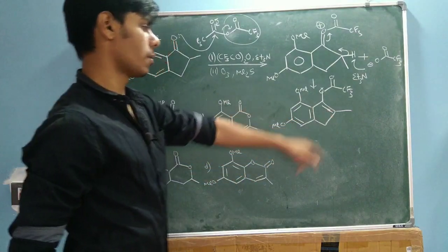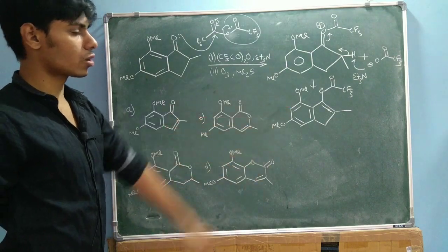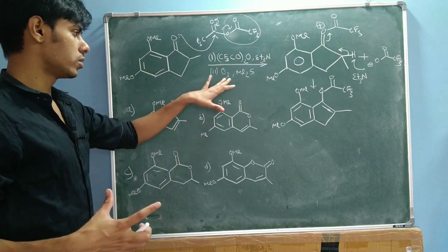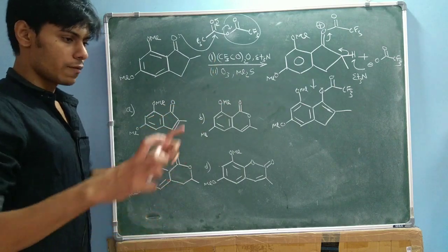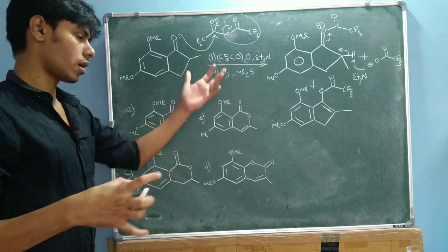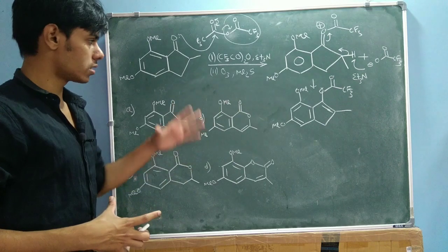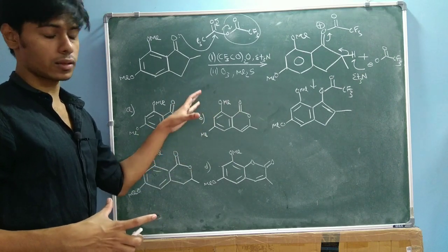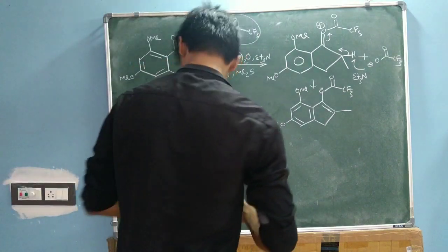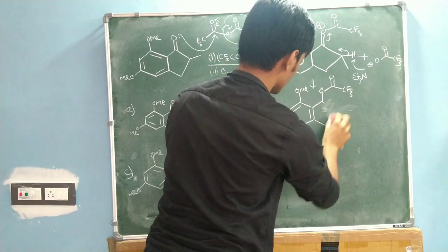Now we have the C=C double bond, so in the second step it will undergo the ozonolysis reaction. You know that under O3 / dimethyl sulfide conditions, a double bond forms two keto groups. If you don't know the mechanism, you can watch my other video dedicated to ozonolysis where I discussed it in detail.